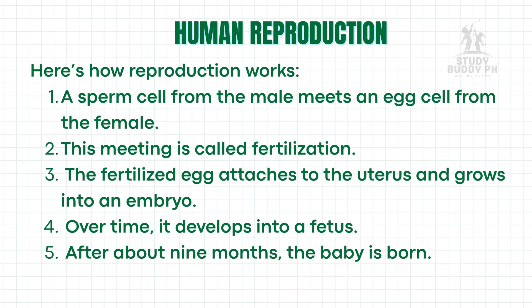Here's how reproduction works. Step 1: a sperm cell from the male meets an egg cell from the female. Step 2: this meeting is called fertilization. Step 3: the fertilized egg attaches to the uterus and grows into an embryo. Step 4: over time, it develops into a fetus. Step 5: after about nine months, the baby is born. So every one of us started as a tiny cell that grew inside our mother's womb.